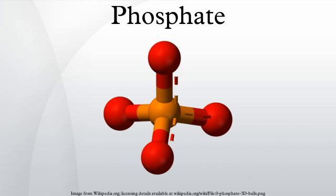A phosphate as an inorganic chemical is a salt of phosphoric acid. In organic chemistry, a phosphate, or organophosphate, is an ester of phosphoric acid.